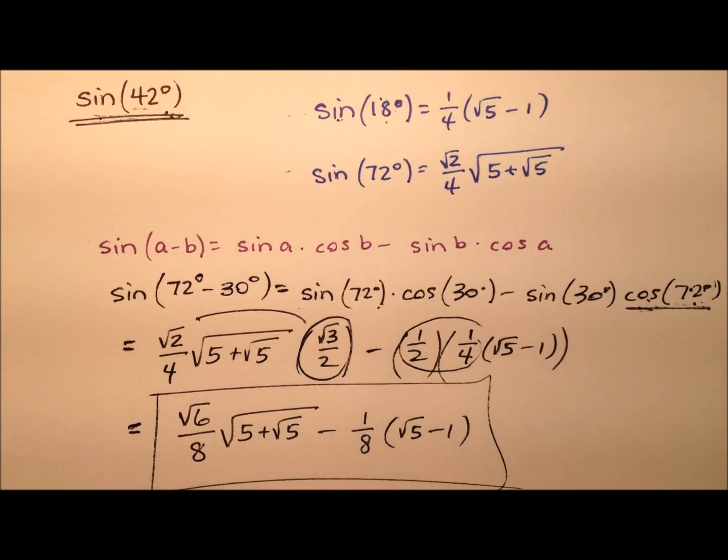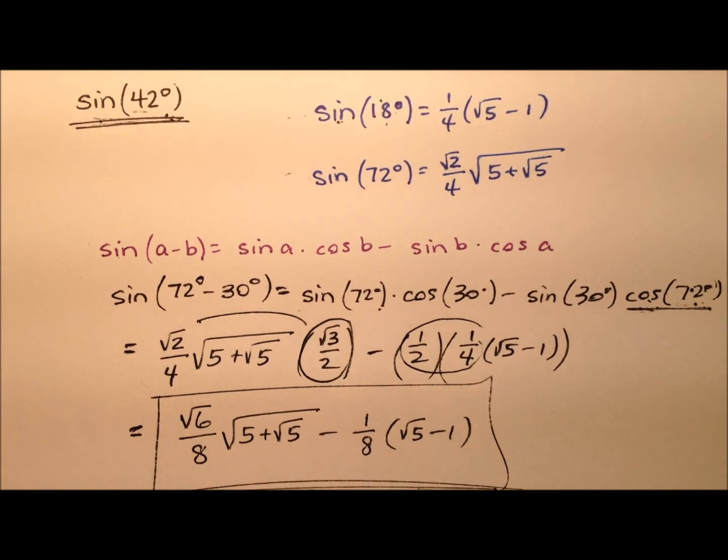Well this is not too bad at all, so I'm saying this is the exact value for the sine of 42 degrees, no rounding, nothing like that, so we just have a couple of irrational numbers that we're subtracting.